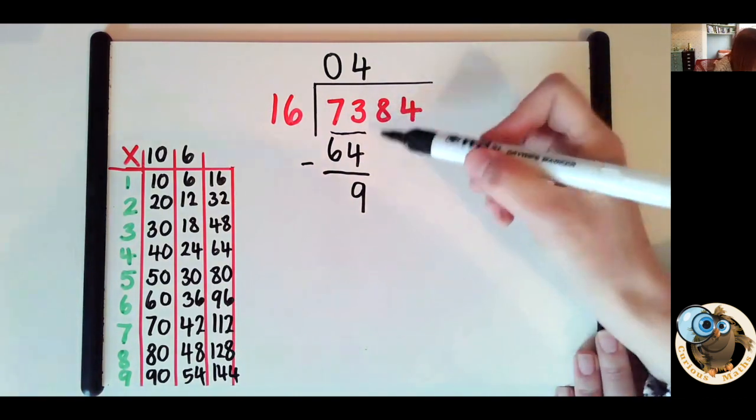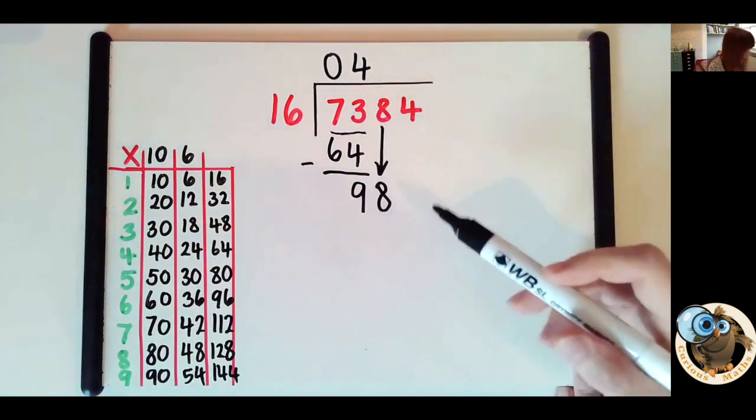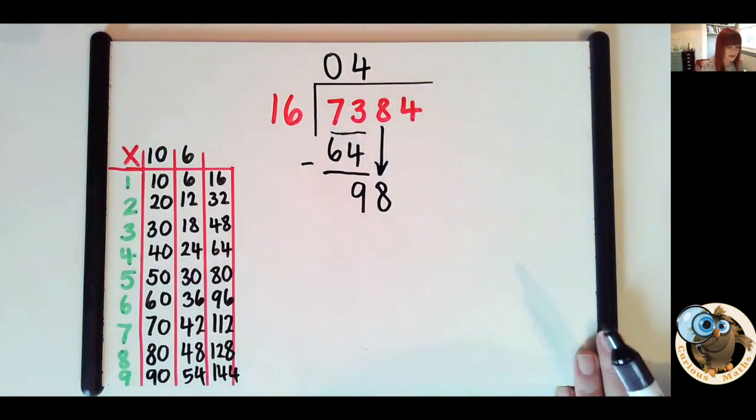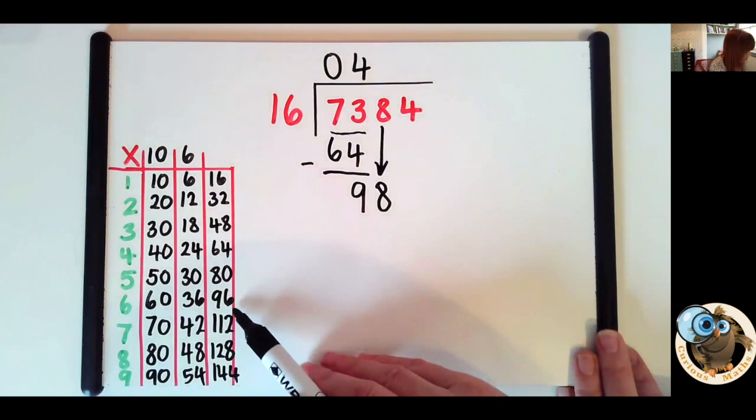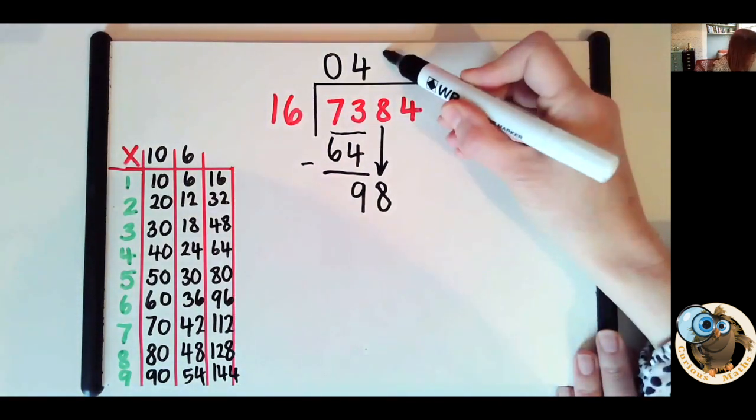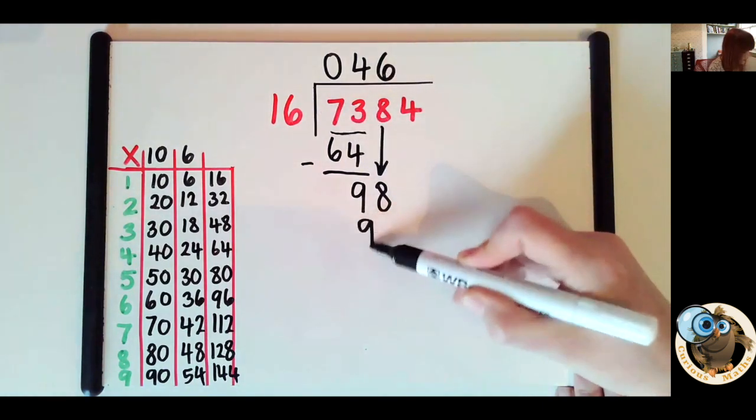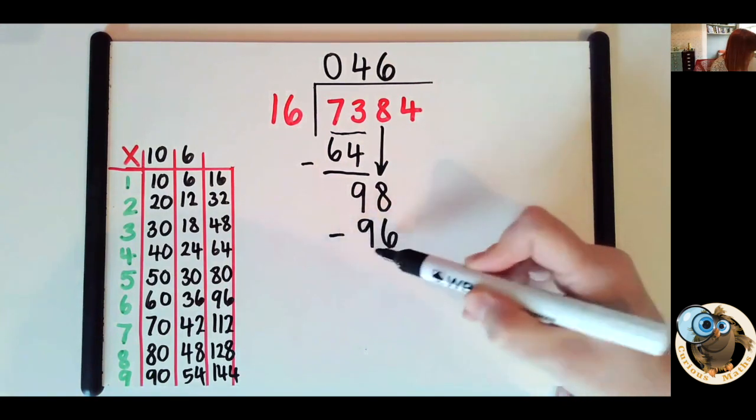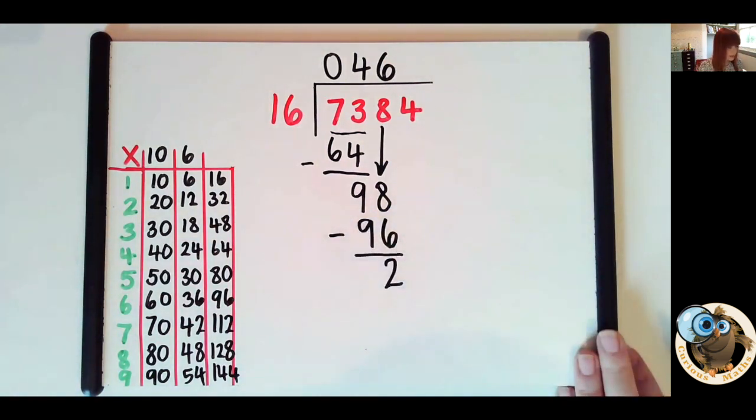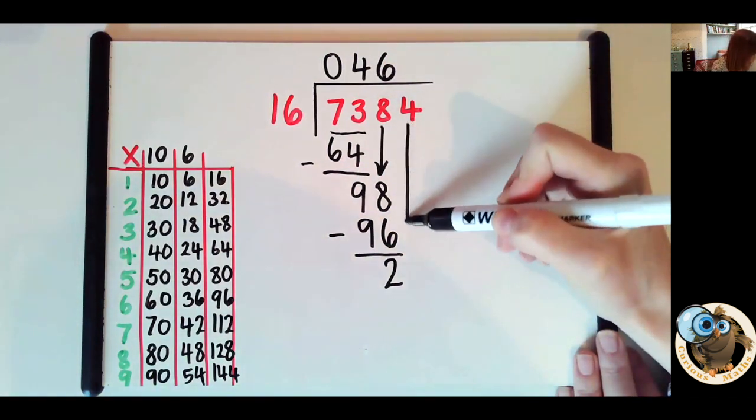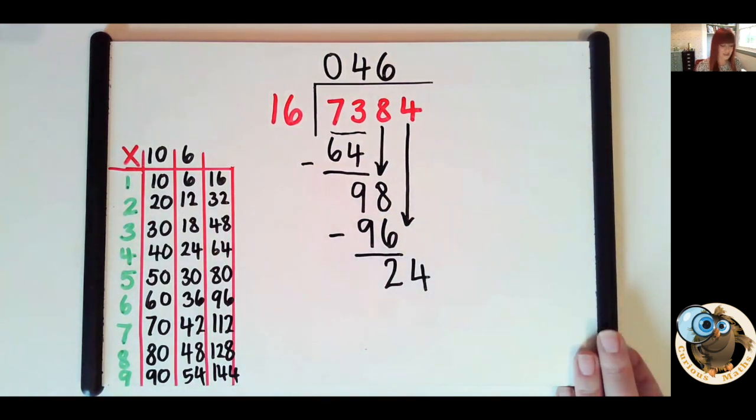Now I bring my next number down. I've used these two, I bring my 8 down. How many 16s in 98? Let's use the partitioning chart. I can see that six 16s are 96. So I put my digit 6 there. Six 16s are 96, and I subtract to leave a difference of 2. Then I go to my final number and I bring that down.